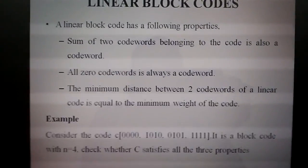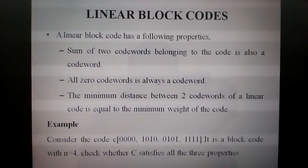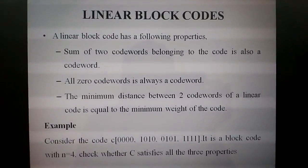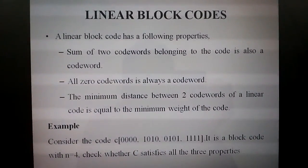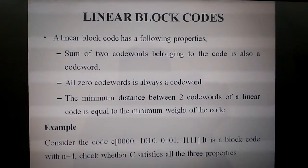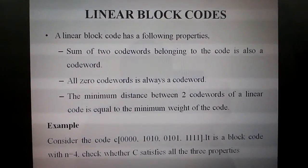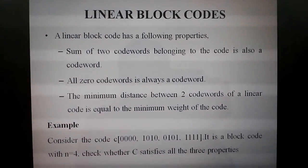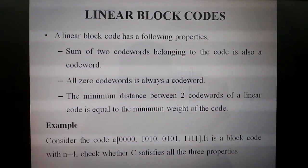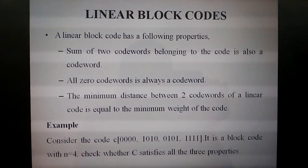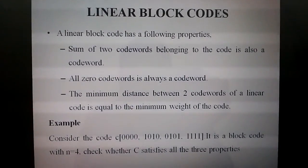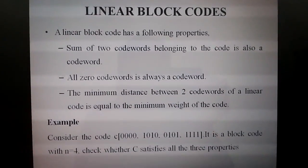What is a linear block code? A code is called a linear block code if it satisfies the following properties: first, the sum of any two code words in the code is also a code word; second, the all-zero code word is also a code word; and third, the distance between two code words is equal to the minimum weight of the code.